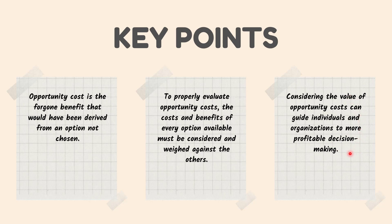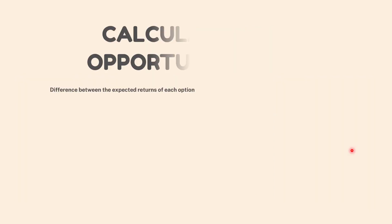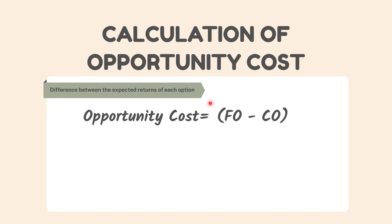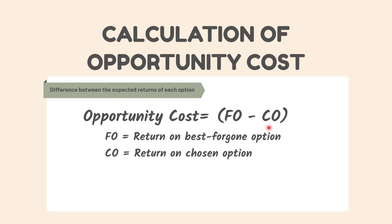Now let's see the formula and calculation of opportunity cost. Opportunity cost equals FO minus CO, where FO equals return on best foregone option, and CO equals return on chosen option.